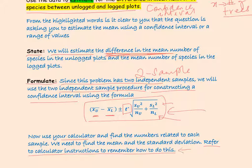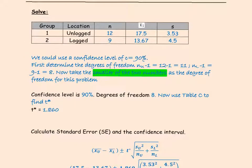Make sure you know how to use your calculator because on the test you will have to use it to figure out these numbers — you will not have access to Crunch It. The formula requires the sample sizes, means, and standard deviations of the two samples. I've put it in the form of a table so it's easy to identify and plug in the numbers.